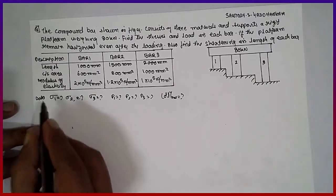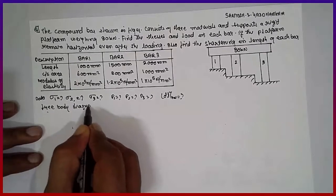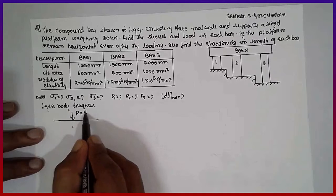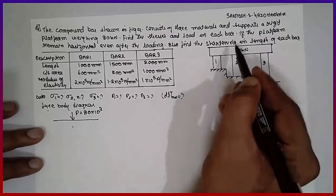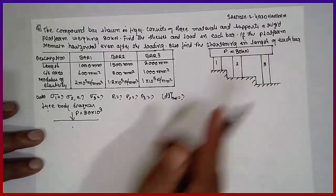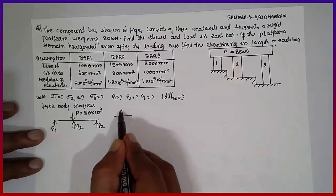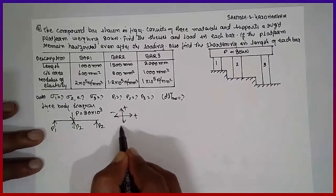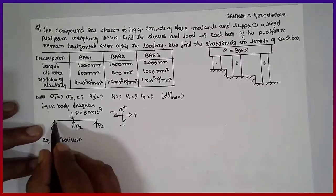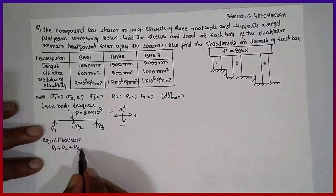Now first I will draw the free body diagram. As per the figure, P is acting downward — 80 kilo Newton, that is 80 into 10 raised to 3. Since P acts downward, the reactions P1, P2, and P3 will act upward. Applying the equilibrium condition: P1 + P2 + P3 − P = 0.